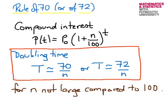The rule of 70, sometimes known as the rule of 72, applies to quantities which are growing according to the rule of compound interest. What it says is that the doubling time — the time it takes for the quantity to double — is approximately given by 70 divided by n, where n is the interest rate, or approximately given by 72 over n.